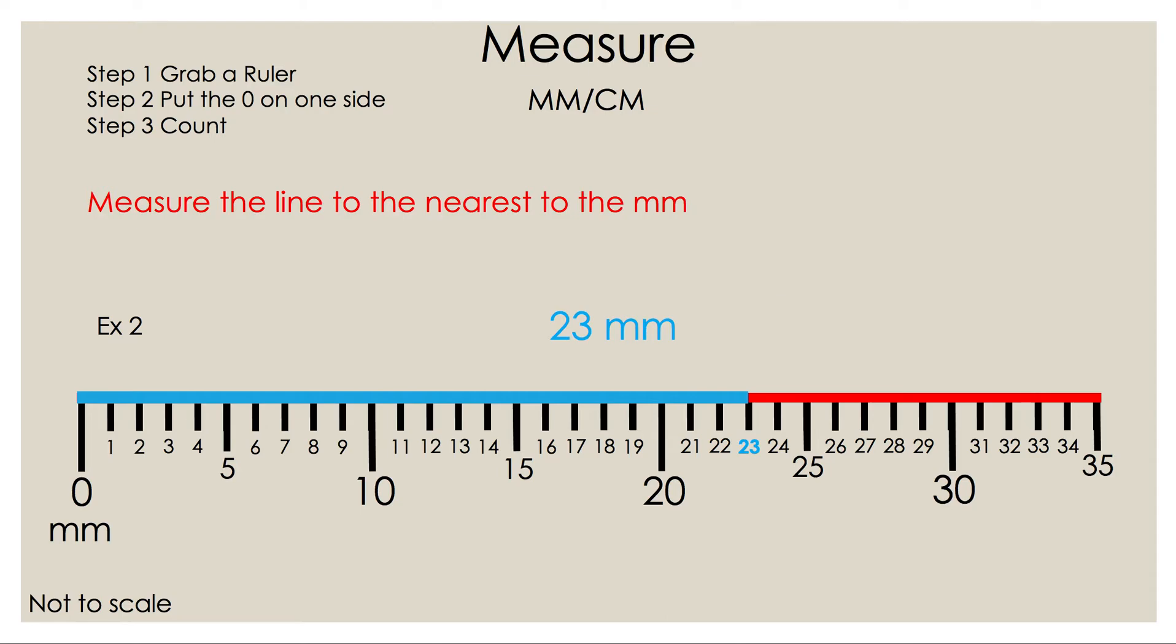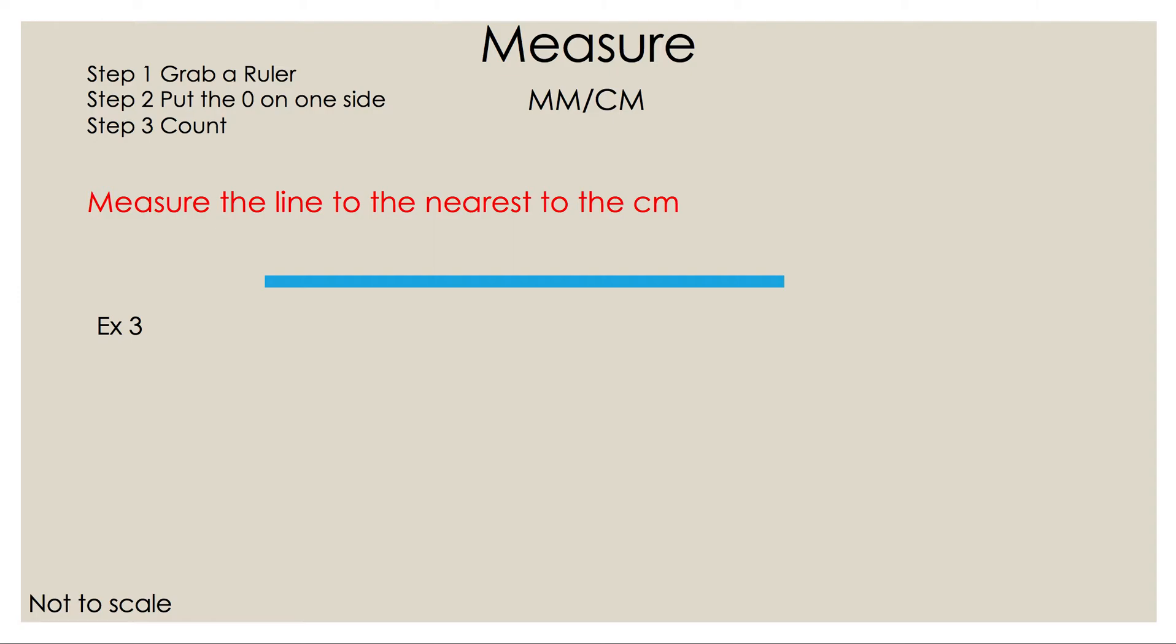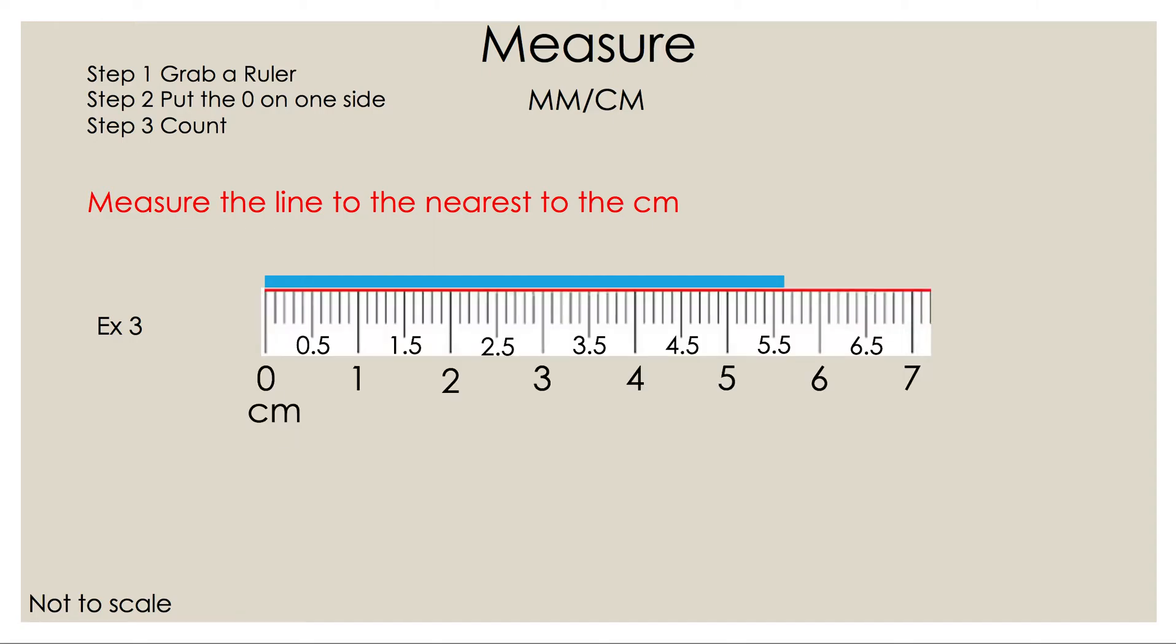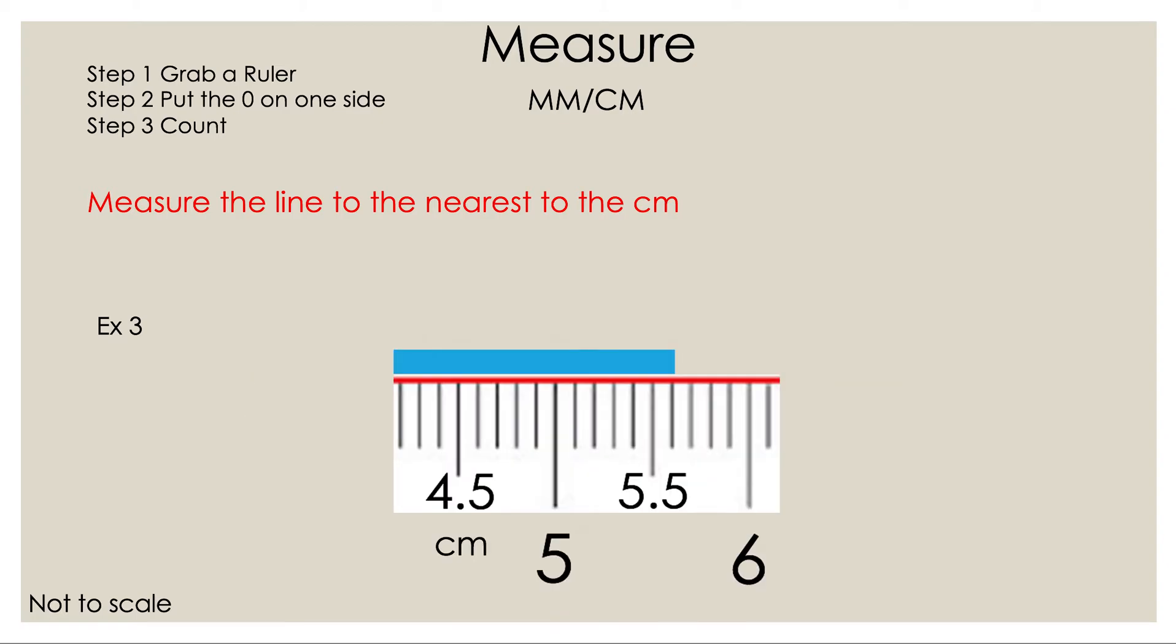Let's take a look at example three. Measure the line to the nearest centimeter. Let's move the ruler to the line. Now let's blow it up so it's easier to count. Let's pick a tick mark that has a value on it so we know where to start counting. Let's pick 5.5 and since it's centimeters we're counting by 0.1. So the next one is 5.6 centimeters.